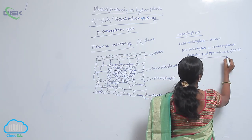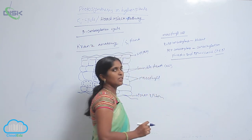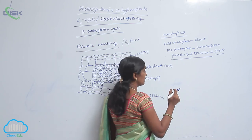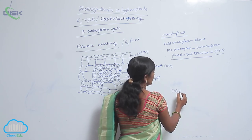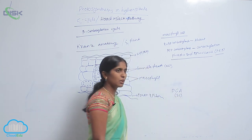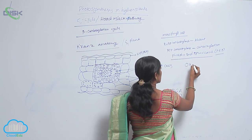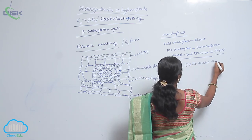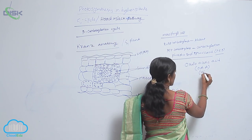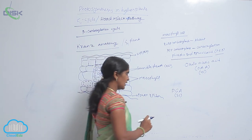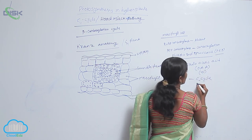In the C4 cycle, the first CO2 acceptor is phosphoenol pyruvic acid, that is PEP. In the C3 cycle, the first stable compound is PGA — phosphoglyceric acid — which consists of a three-carbon molecule. Whereas in C4 plants, the first stable intermediate compound is oxaloacetic acid, that is OAA, which has four carbons. So it is a four-carbon compound, and hence the cycle is written as the C4 cycle.